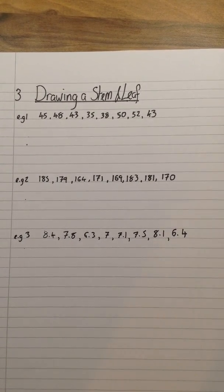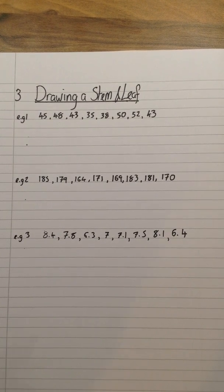Today's lesson is about drawing stem and leaf diagrams. Can you get the title, grade, and date into your book? A stem and leaf diagram is a way of showing information. Here we've got three examples that we're going to work through.